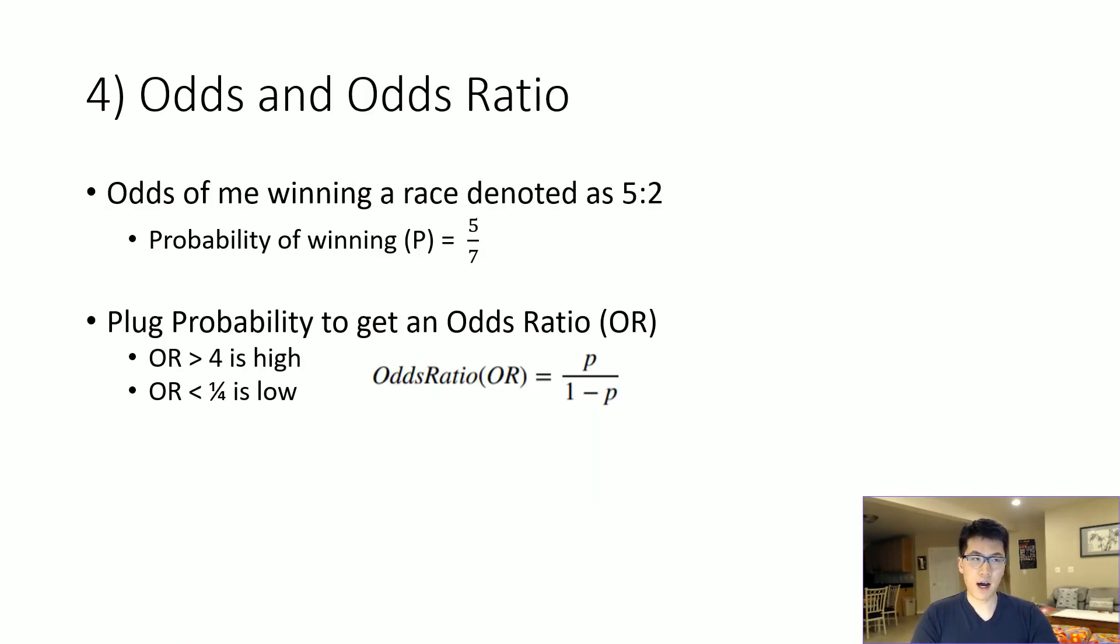And so the odds and odds ratio is somewhat important to understand. This just determines the confidence on what a given probability would be. For example, if I were running a race and the odds stacked with me or the probability of me winning is five to two, then the probability of me winning is five divided by seven.